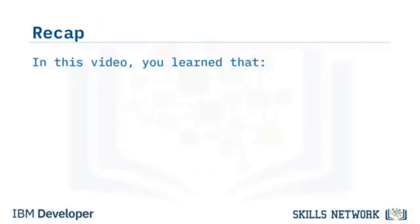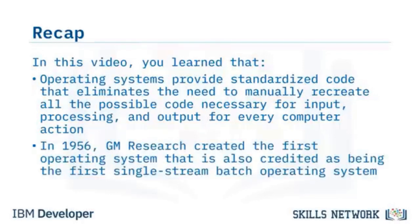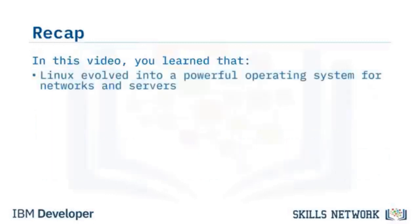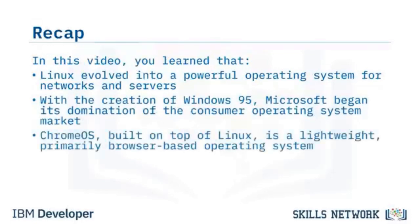In this video, you learned that operating systems provide standardized code for input, processing, output, and storage. In 1956, GM Research created the first single-stream batch operating system. Linux evolved into a powerful OS for networks and servers. Windows 95 launched Microsoft's dominance of the consumer OS market. And Chrome OS, built on top of Linux, is a lightweight, primarily browser-based operating system.